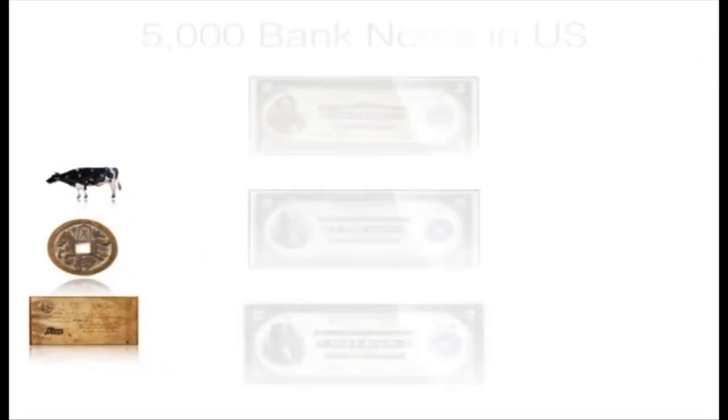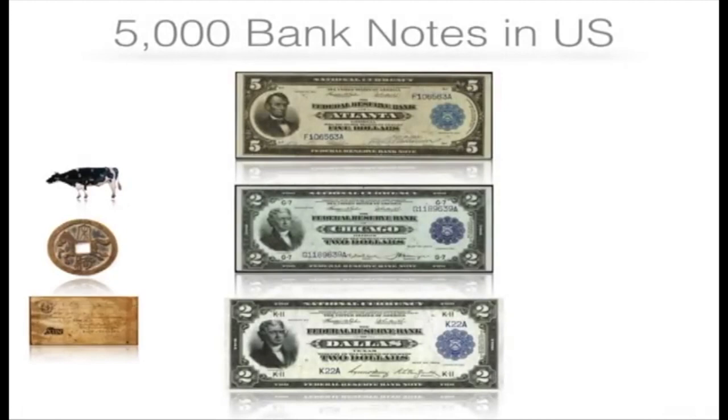In fact, before 1918 — less than 100 years ago — there were more than 5,000 different bank notes in circulation in the US alone. Each US dollar bill was issued by a different bank, and you could actually take one of these currency notes back to the issuing bank and exchange it for a fixed amount of precious metal like silver or gold. This kind of money was what experts call backed by the gold standard.